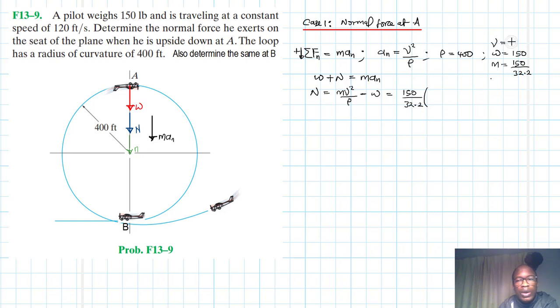Making N subject of the formula, N becomes equal to m*v squared divided by rho minus W. This is equal to 150 divided by 32.2. Our v is equal to 120. Since our v is a constant speed we expect the tangential acceleration to be equal to zero. This is divided by rho which is equal to 400.